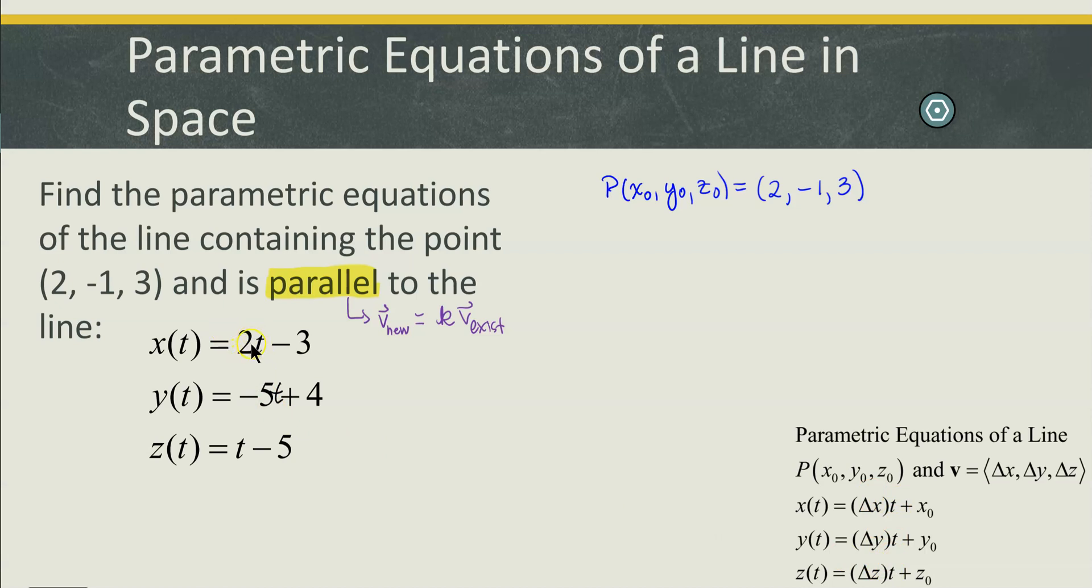So over here, I can see that my coefficients for my parameter t for each equation are 2 in the x equation. So my change in x is going to be 2. I've got negative 5 as the coefficient in my y equation. That means the change in y as we move along the line is negative 5. And then for the z equation, our coefficient is 1. So the change in z will be 1.